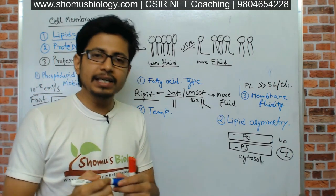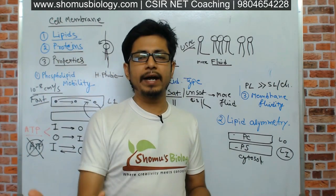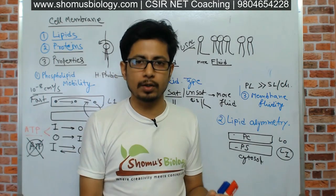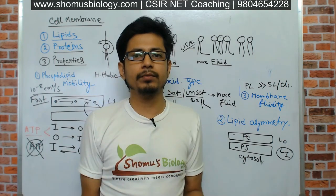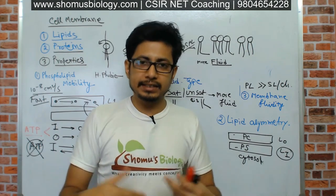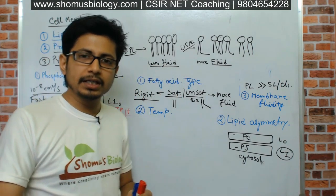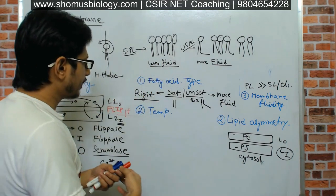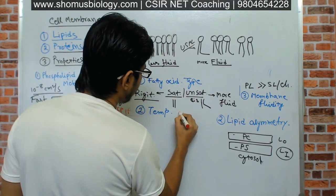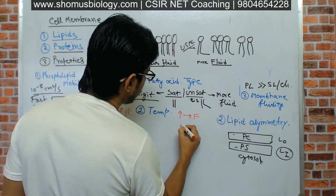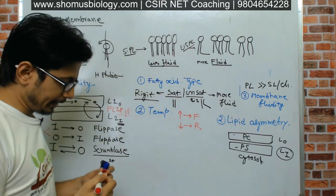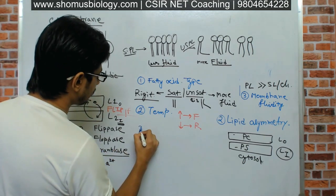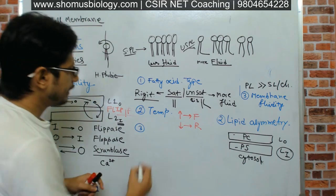The second parameter is temperature. Since the membrane is made of lipids — essentially fat — temperature has a direct effect, just like coconut oil: it freezes in winter and becomes liquid in summer. Higher temperature means a more liquid, fluid membrane, while lower temperature means a more rigid membrane.